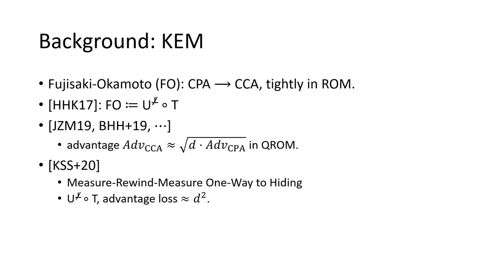Until last year, Kuchta and others gave an improved one-way-to-hiding lemma, named measure-rewind-measure one-way-to-hiding. Using it, the loss is reduced to about D-square, where D is the query depth to the Random Oracle.